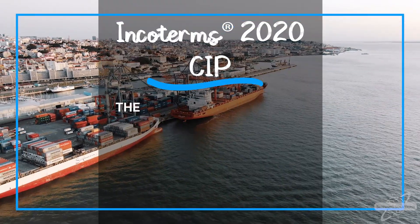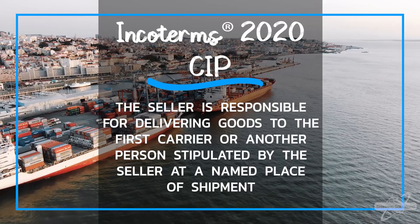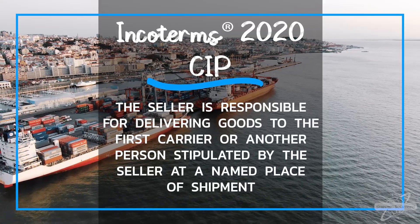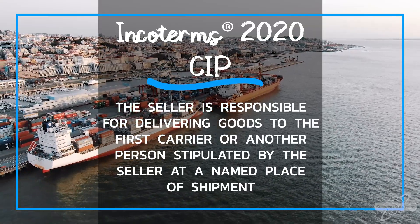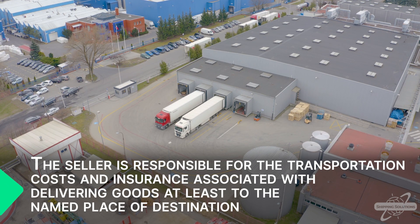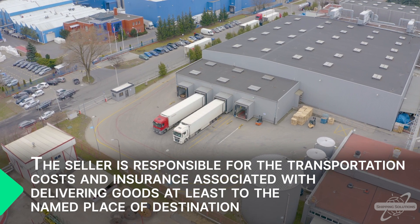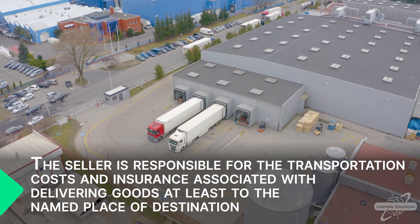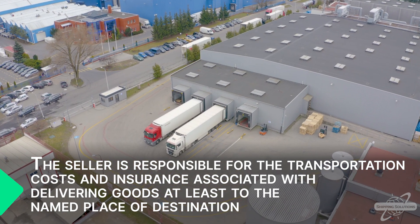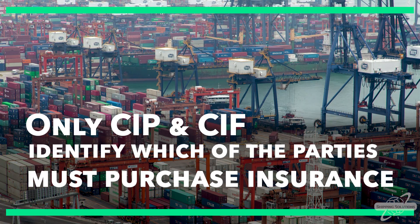Under CIP, the seller is responsible for delivering goods to the first carrier or another person stipulated by the seller at a named place of shipment, at which point the risk transfers to the buyer. The seller is responsible for the transportation costs and insurance associated with delivering goods at least to the named place of destination.